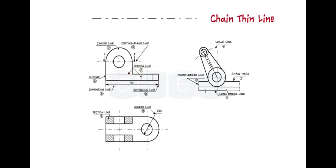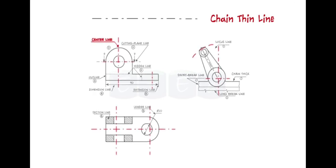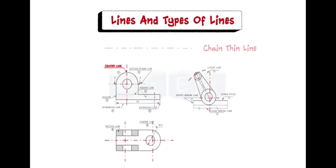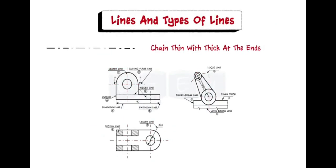Next is the chain thin line, long dash-dotted; this line is used to represent the center line for circles and arcs. Next is the chain thin line with thick at the ends; this line is used to represent the location of a cutting plane.